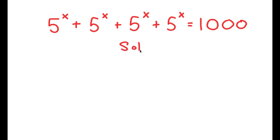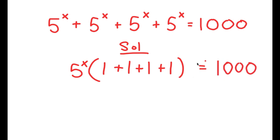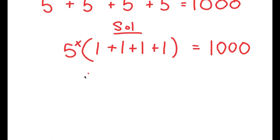For my solution, I'm going to first start by factoring out 5 to the power of x from my left hand side. As you can see, we have 4 of the same terms on the left hand side, and the easiest way to solve this equation is to factor them out. So I get 5 to the power of x times 1 plus 1 plus 1 plus 1 is equal to 1000. And 1 plus 1 plus 1 plus 1 is 4, so I get 5 to the power of x times 4 is equal to 1000.